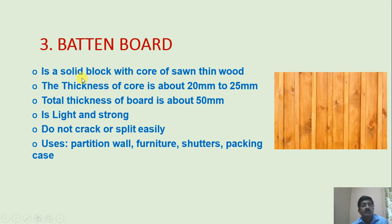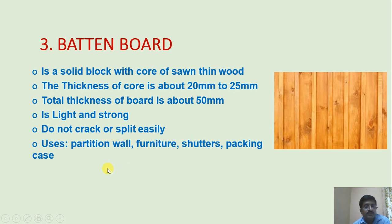Batten board is a solid block with a core of sawn thin wood. The thickness of the core is about 20 to 25 mm and the total thickness of the board is about 50 mm. It is light and strong, does not crack or split easily, and is used for partition walls, furniture, shutters and packing.